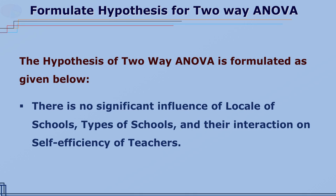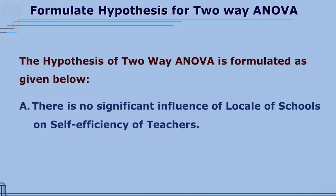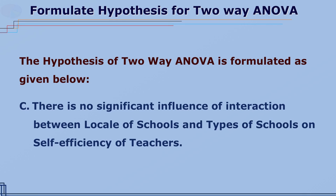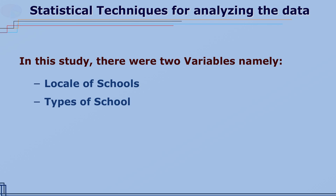The hypothesis can also be written separately: there is no significant influence of locale of schools on self-efficacy of teachers, and there is no significant influence of interaction between locale of schools and types of schools on self-efficacy of teachers. To test these hypotheses, two-way ANOVA can be used. Since locale of schools has two levels and types of school has three levels, it can also be called a 2-by-3 factorial design ANOVA.